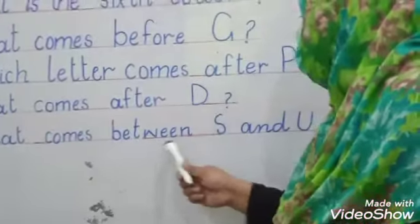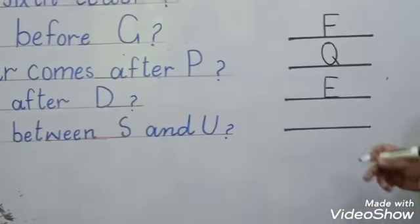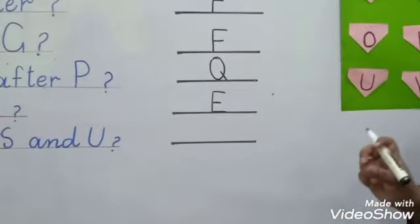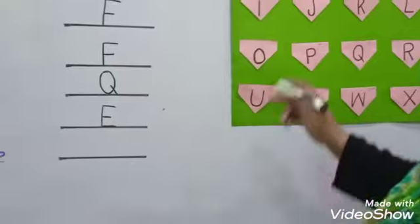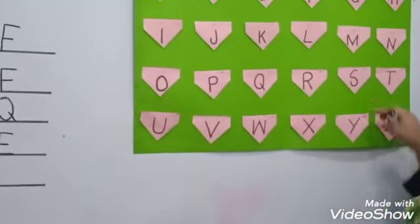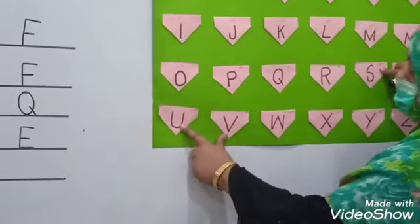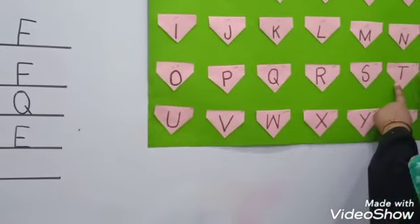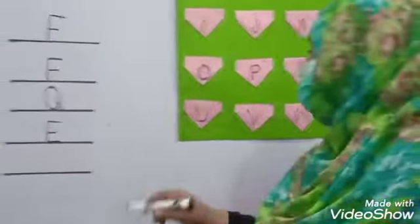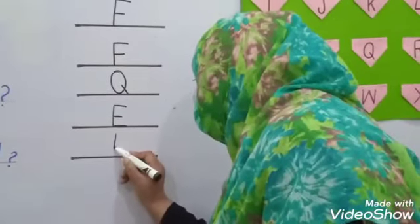What comes between S and U? Between means S or U. What comes between S and U? So again let's check on our alphabet. This is S and U. Now look at which letter comes from S and U. Yes, T.